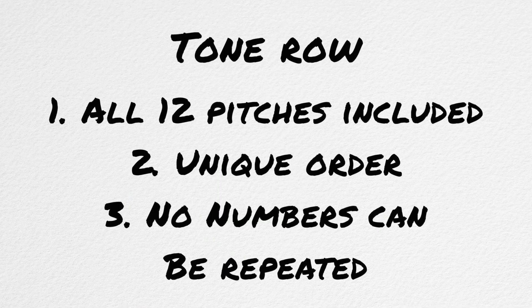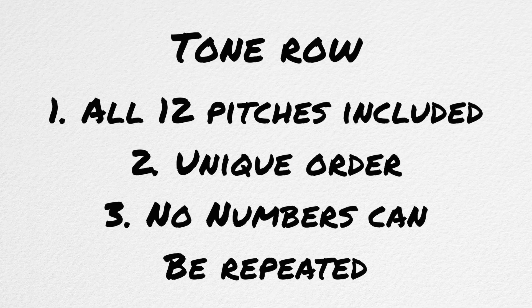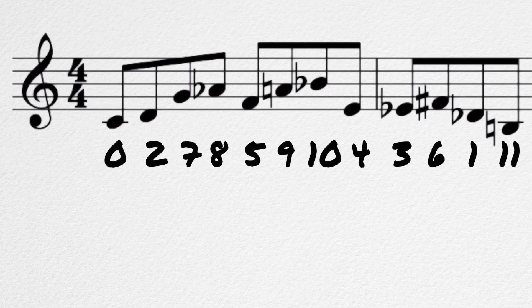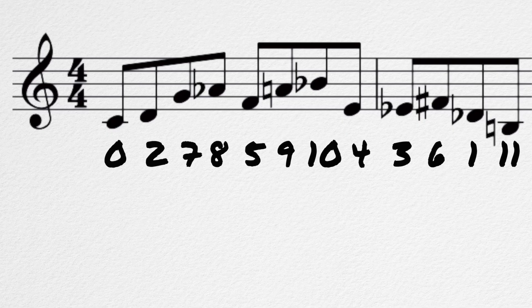In order to compose a 12-tone composition, we must first derive a tone row. A tone row is just a string of these 12 pitches in a unique order, with the caveat being that each pitch must be used at least once and none of them can be repeated. So the row that we'll use is this. So for our composition, we have to use all of these notes in that order before repeating any notes.